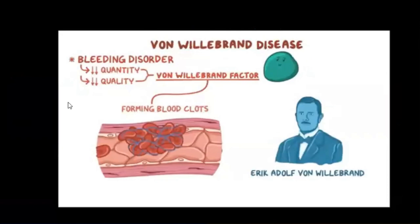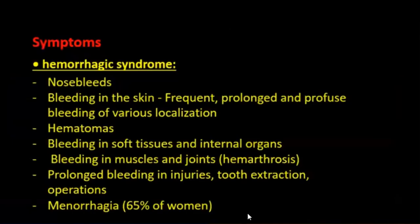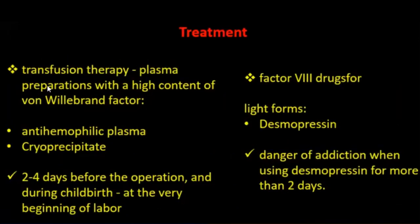Von Willebrand disease involves bleeding disorders with involuntary factors forming blood clots. Symptoms: hemorrhagic syndrome, nosebleeds, bleeding in the skin, hematomas, bleeding in soft tissue and internal organs, and menorrhagia. Treatment: transfusion therapy, cryoprecipitate, factor VIII drugs. For light forms: desmopressin, with caution regarding addiction risk when using desmopressin for more than two days.